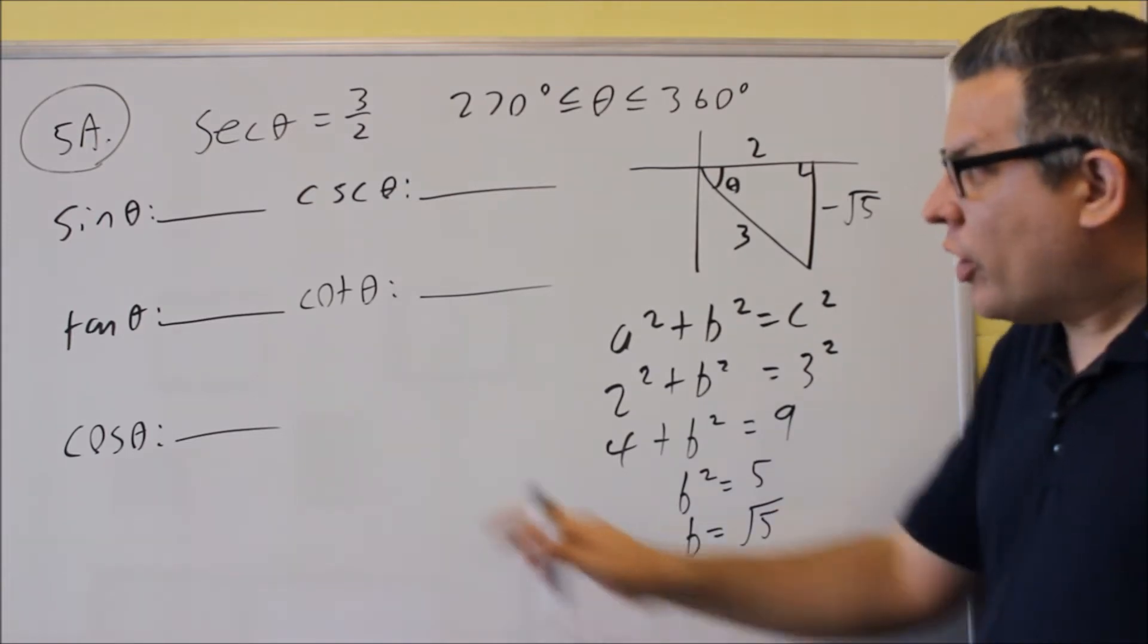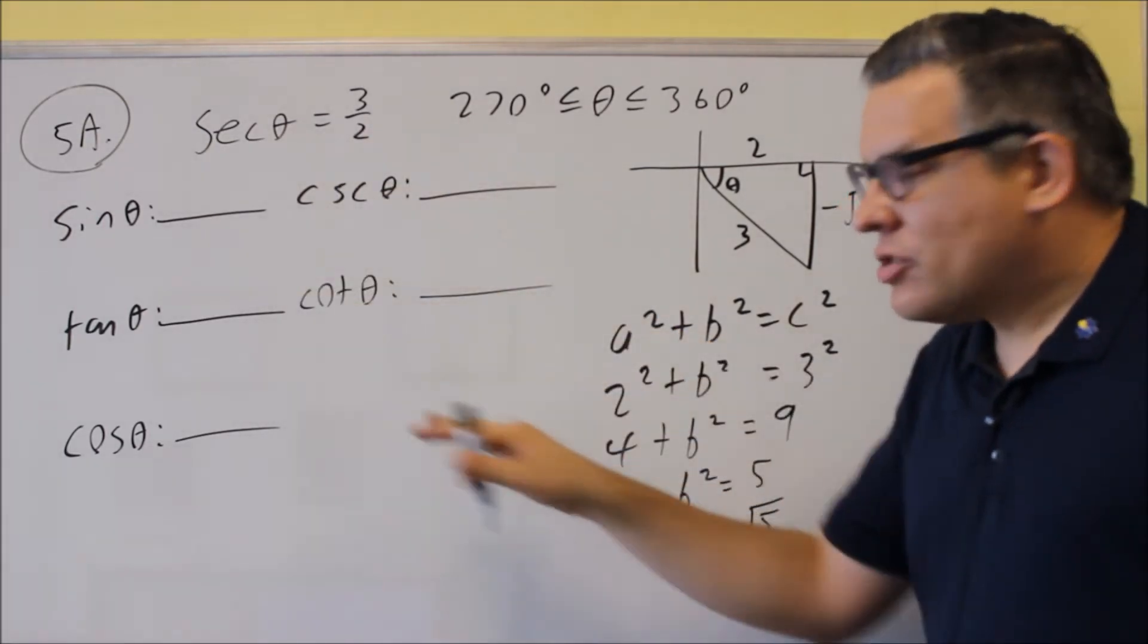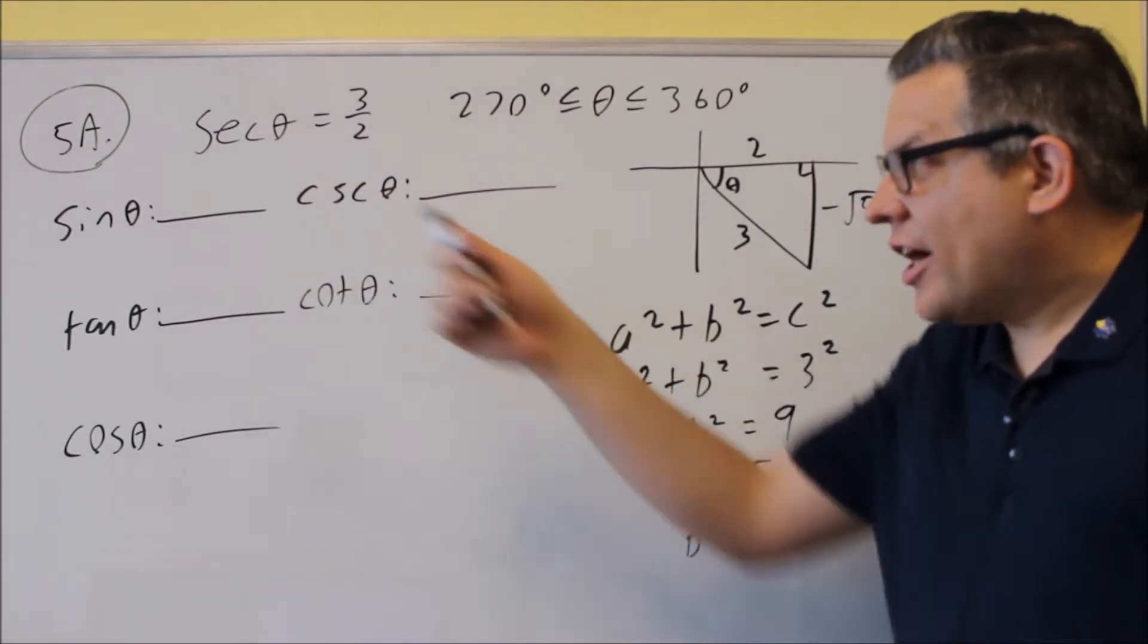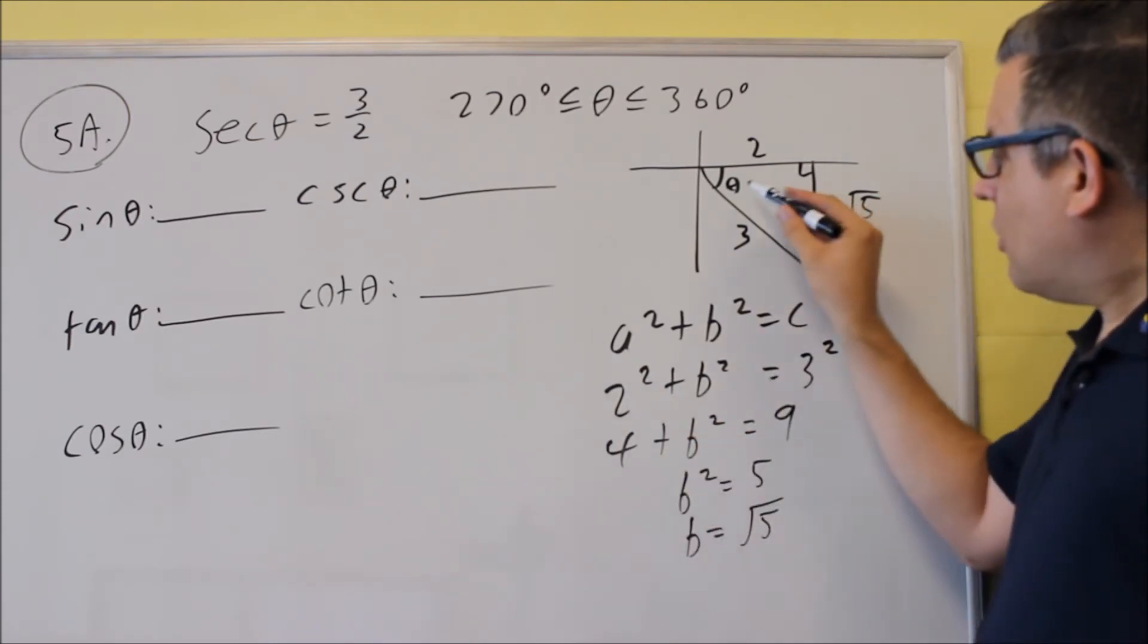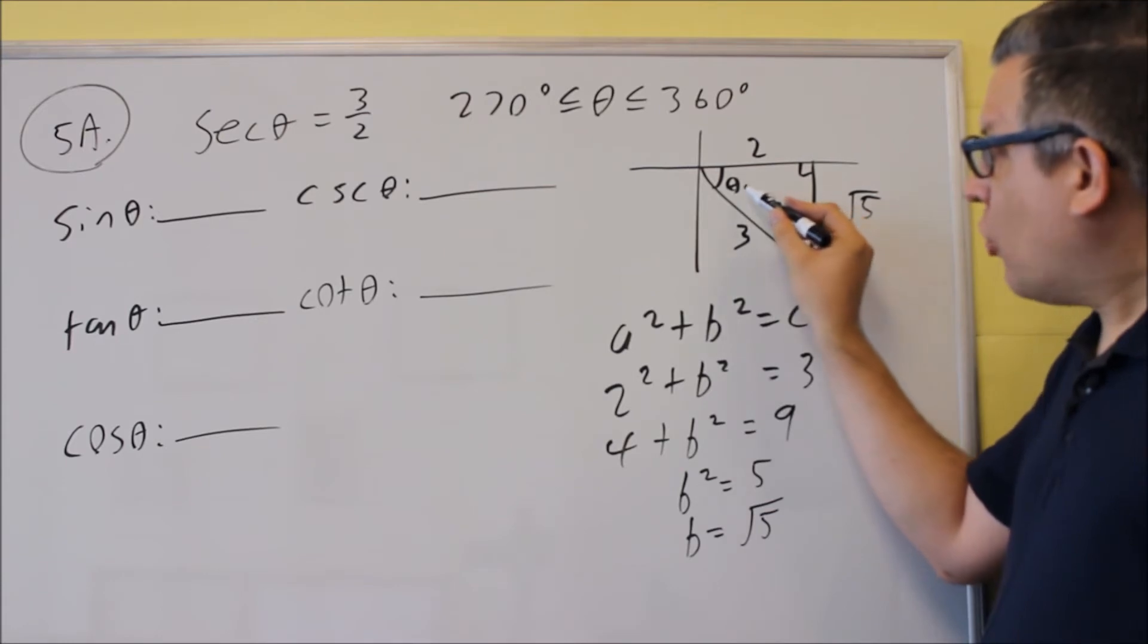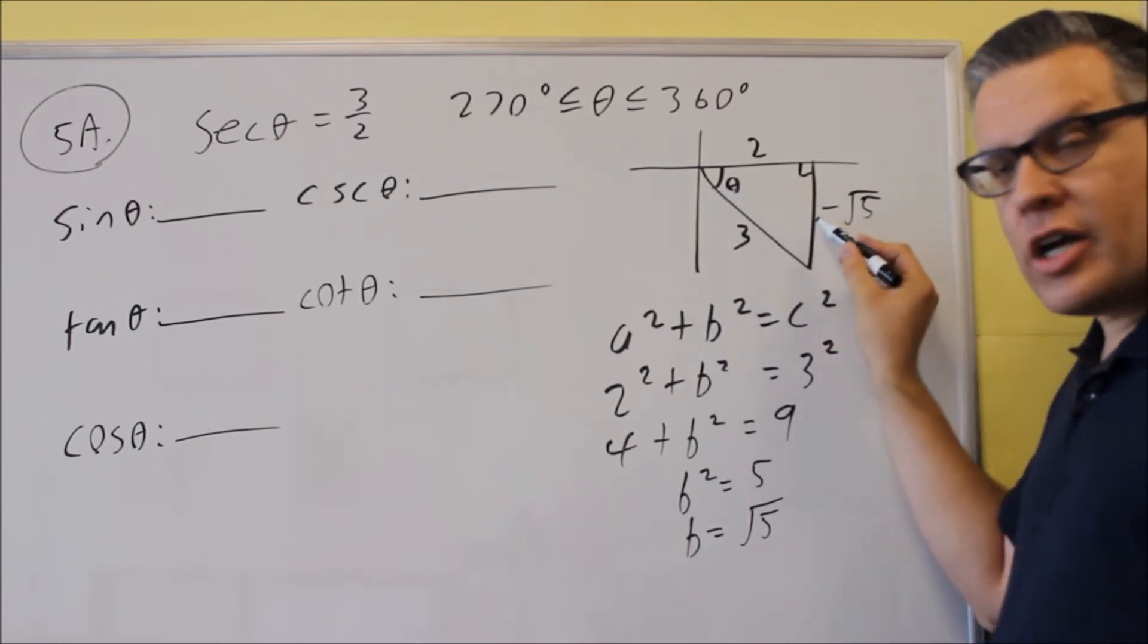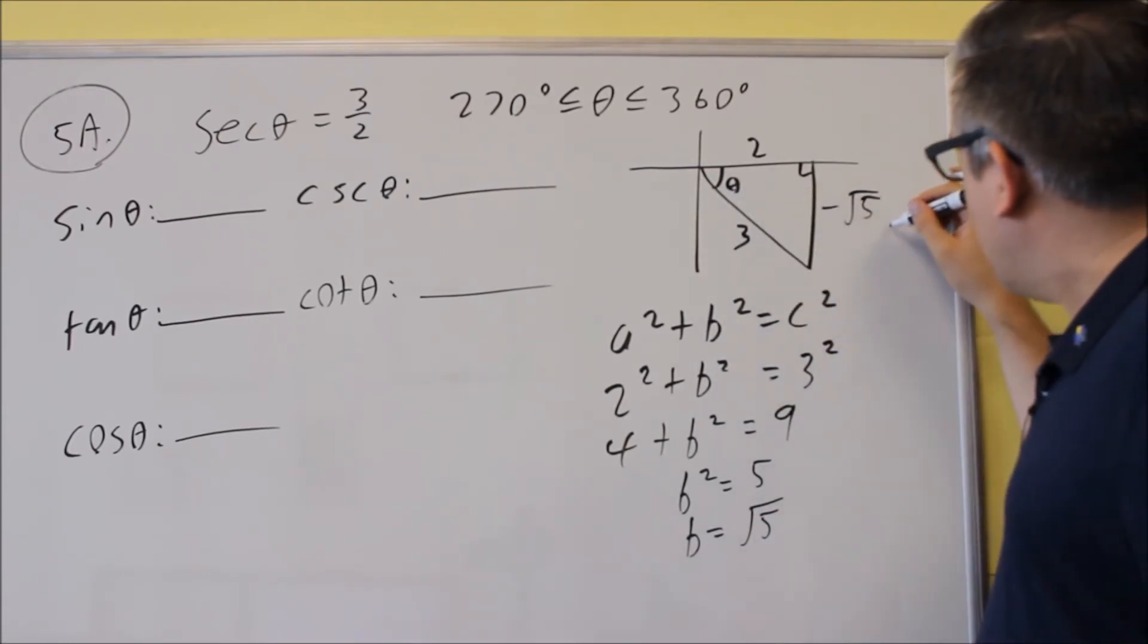Okay, so now that we've got this complete, we're ready to use trig definitions to fill these blanks. Sine is equal to opposite over hypotenuse. The opposite would be the one that's opposite or across the triangle from my theta. So this here, I'm going to label this side as opposite.